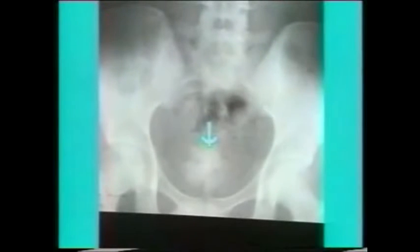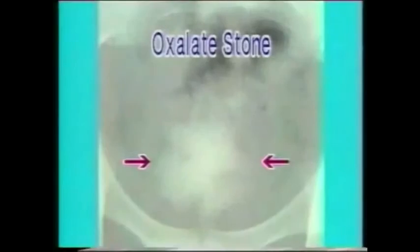This is another bladder stone with a spiky margin — an oxalate stone. It has very large spikes.